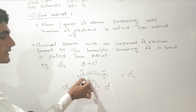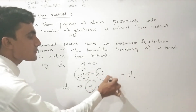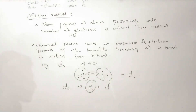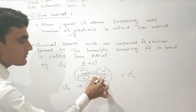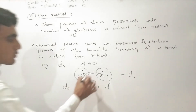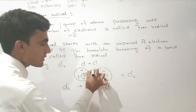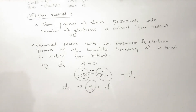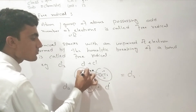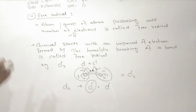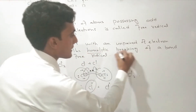When the bond breaks, each atom receives one unpaired electron. If we have an unpaired electron, we get Cl dot — an unfair electron. This is homolytic breaking, where each electron goes to one atom. Each chlorine gets one electron, making them free radical species.